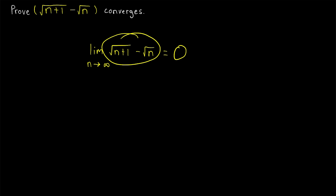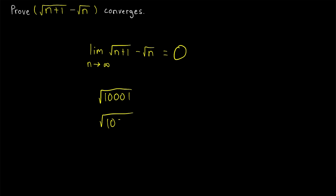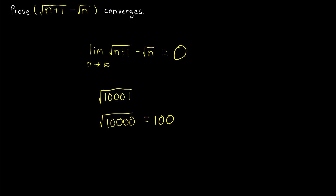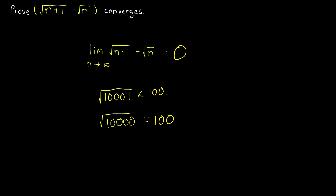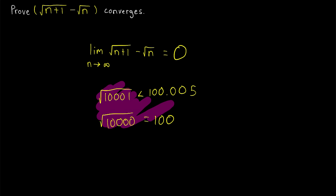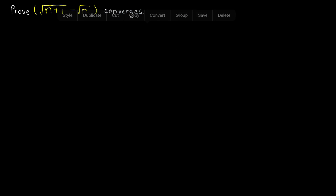For an example of how the square roots of consecutive numbers get very close together, consider √10001 versus √10000. The square root of 10,000 is equal to 100. The square root of 10,001 is a little bit bigger than 100, but it's less than 100.005. So already, when we get to 10,000, the difference between consecutive square roots is very small.